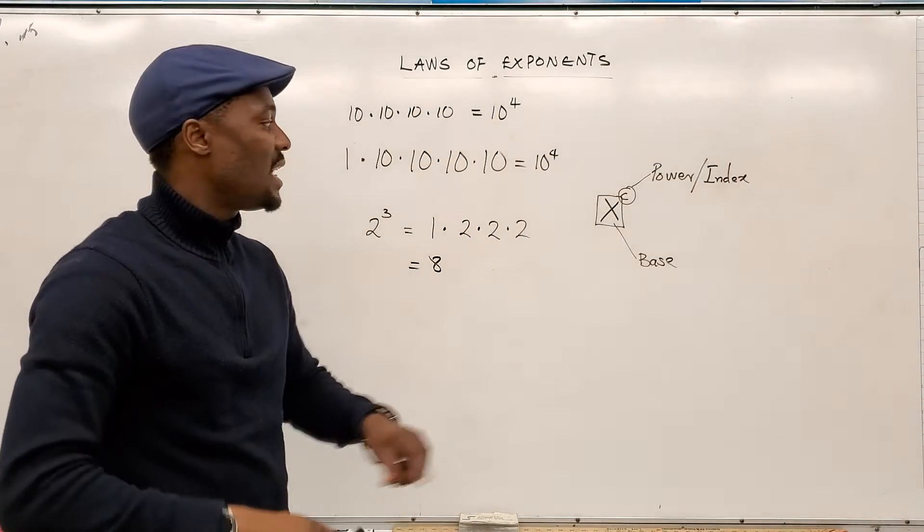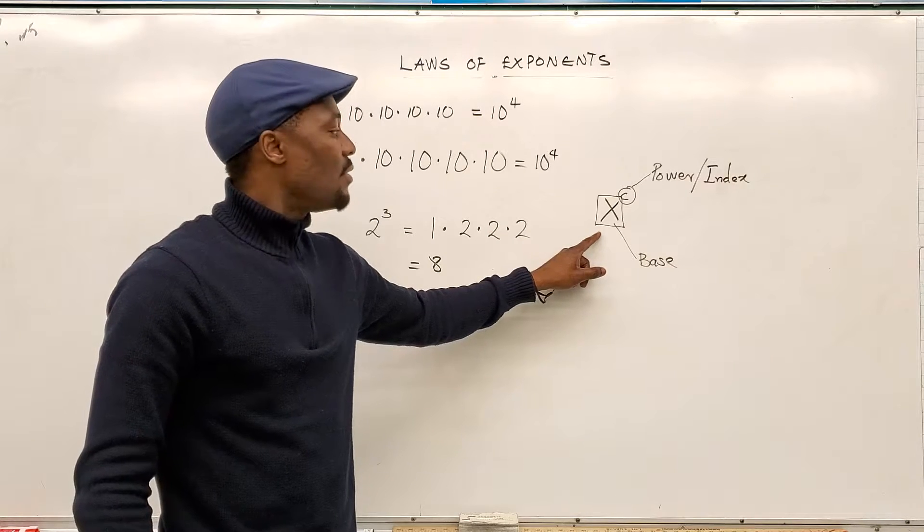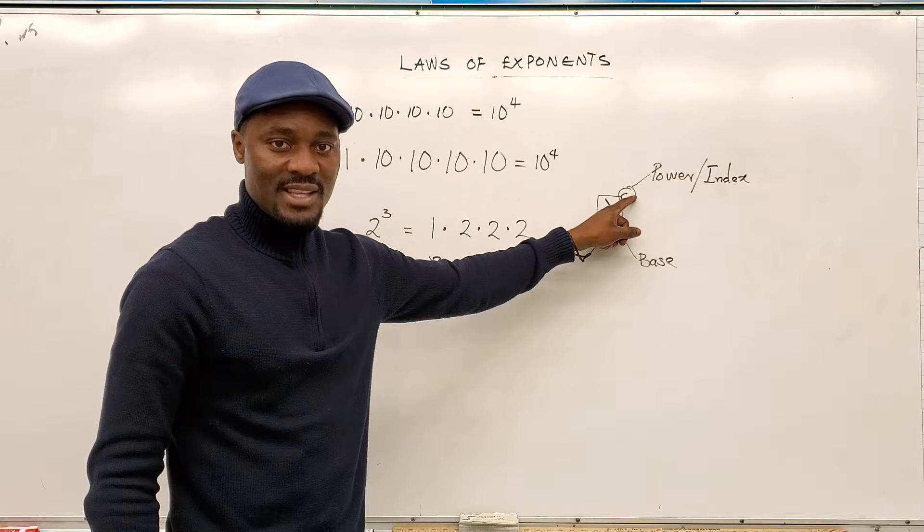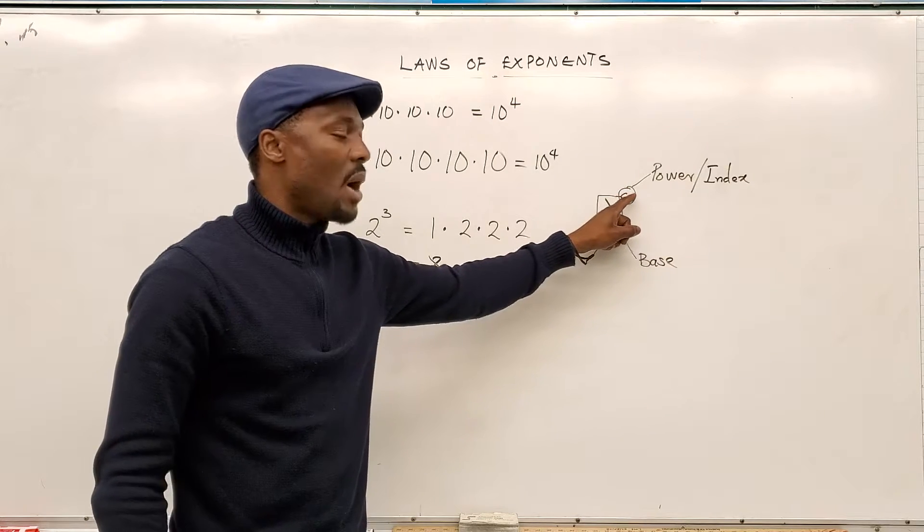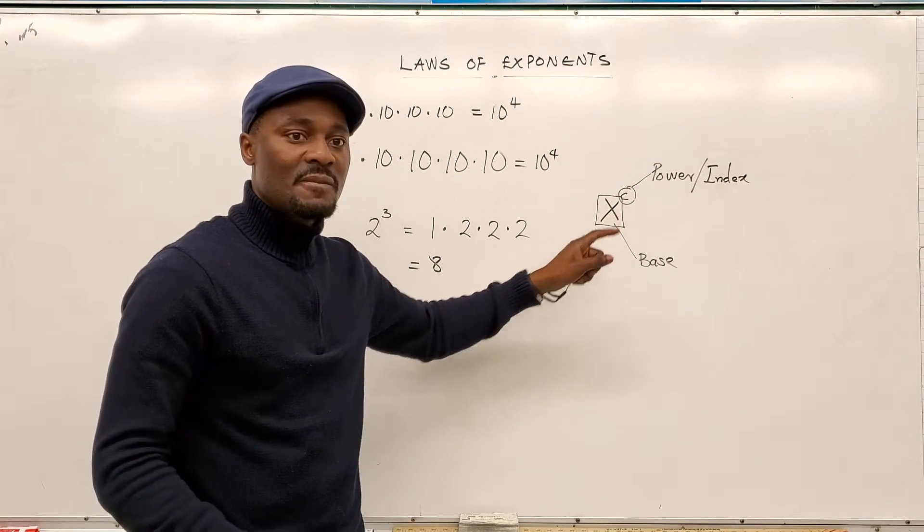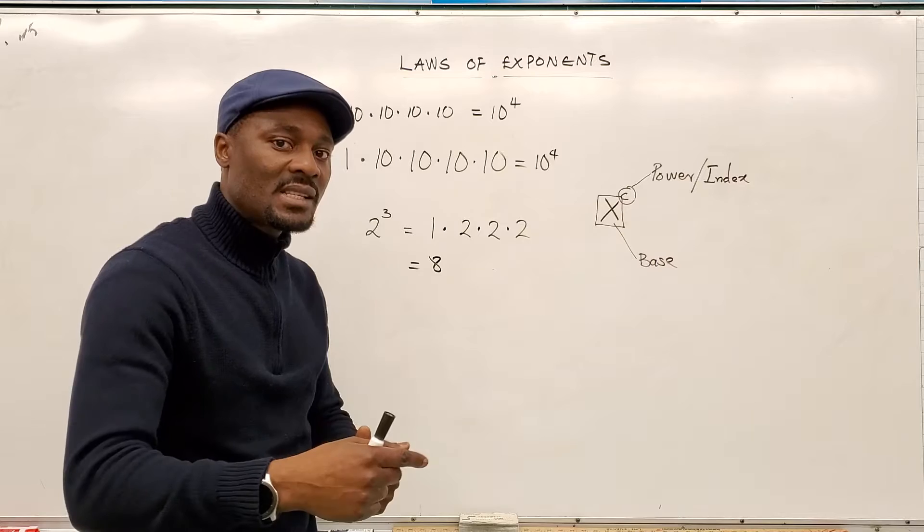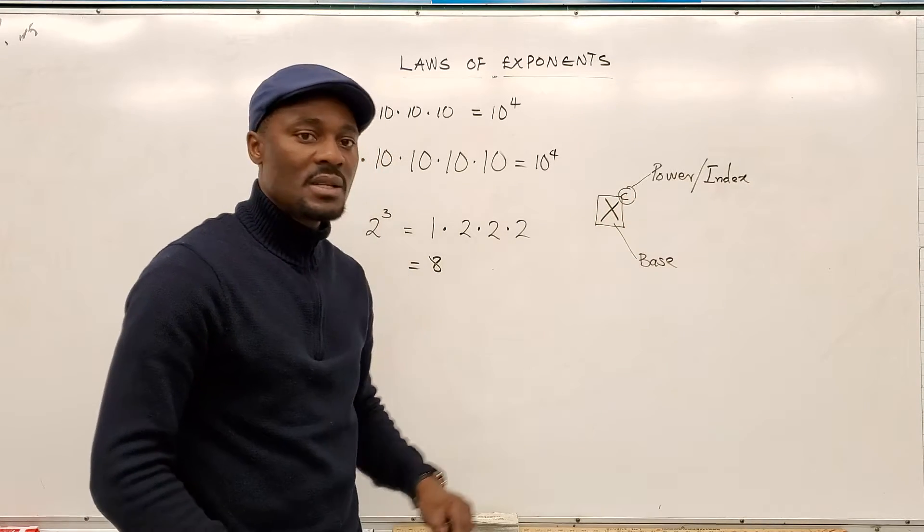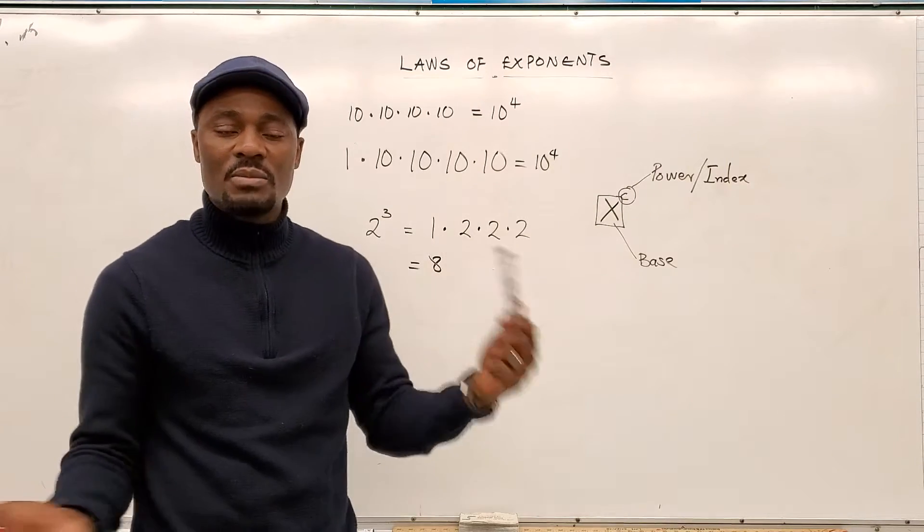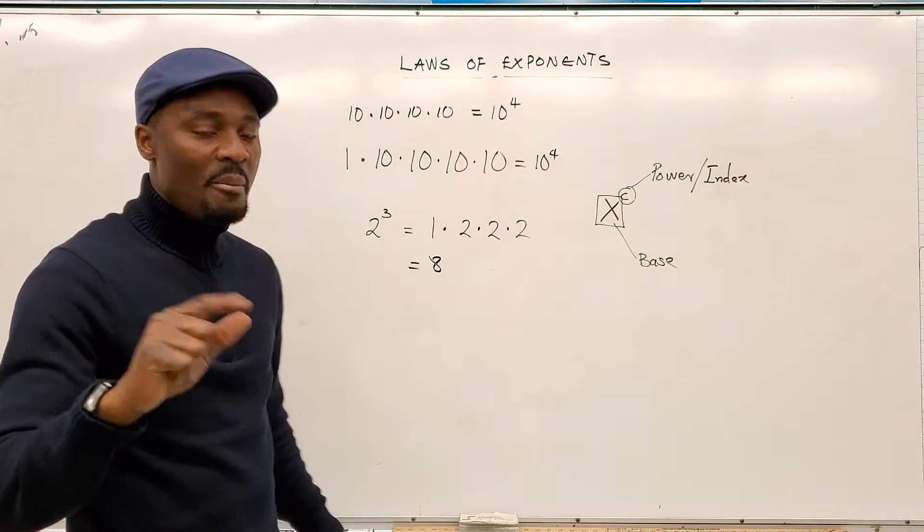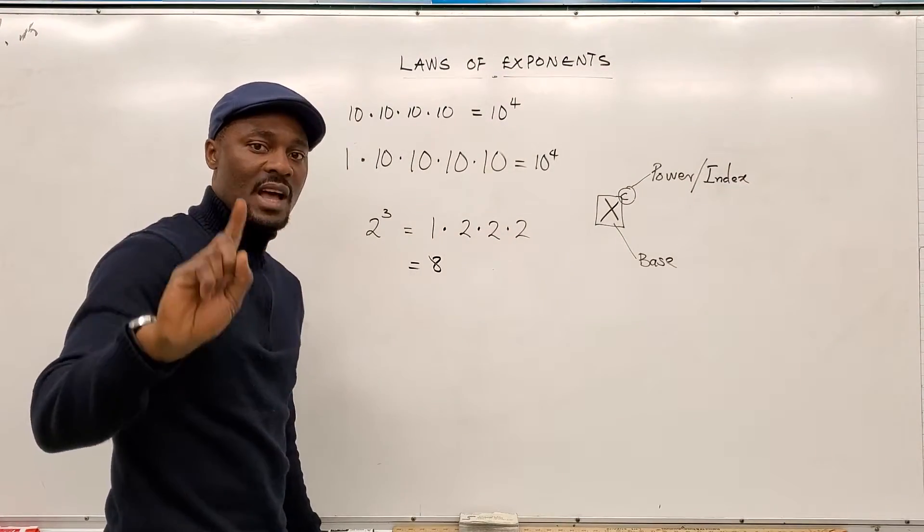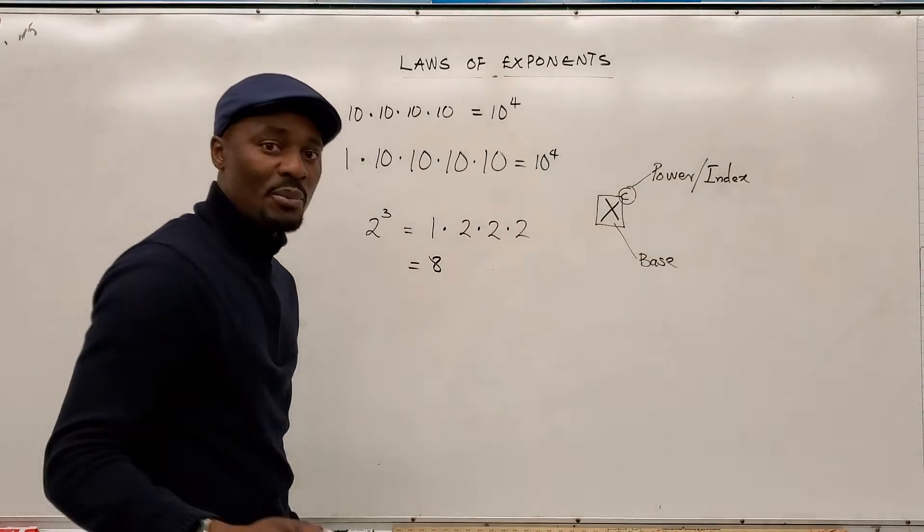So when you read this, you say it is X raised to power C, or you say X to the C. That's how you say it. X raised to power C or X to the C. It means you're multiplying X by X by X, and the number of times you do that is determined by C. Remember, if you put one at the beginning to multiply, it doesn't change anything. But I just introduced this one to help us in a future exercise.